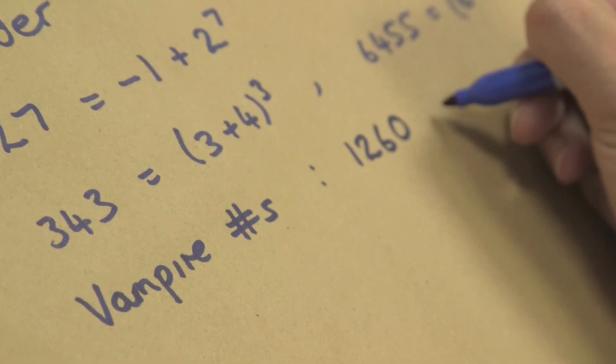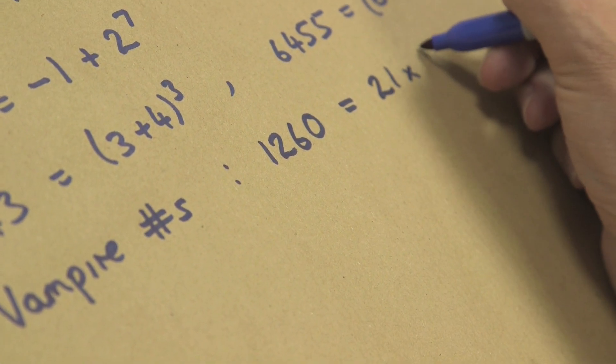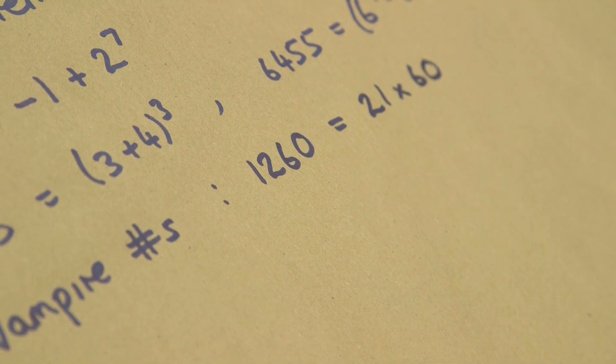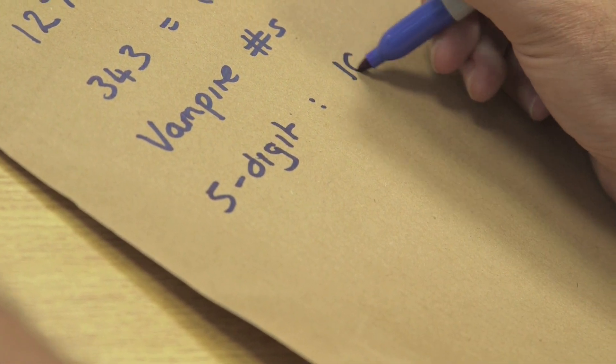So 1260 is a vampire number, but it's also a Friedman number because it's 21 times 60. You can get a bit bigger. So we've got 5-digit numbers, of which there are 272 of them, by the way.